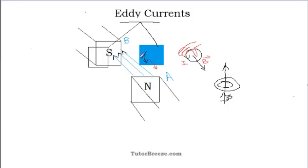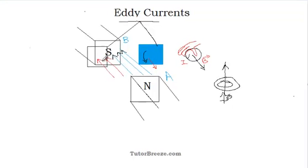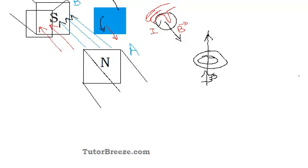Just as we talked about the plate entering the magnetic field, similarly think of an explanation when the plate is moving out of the magnetic field. In that case again you will have eddy currents which will flow in this plate as it is moving out of the magnetic field. Using a similar explanation and Lenz's law, find the direction of the eddy current while it moves out of the field.